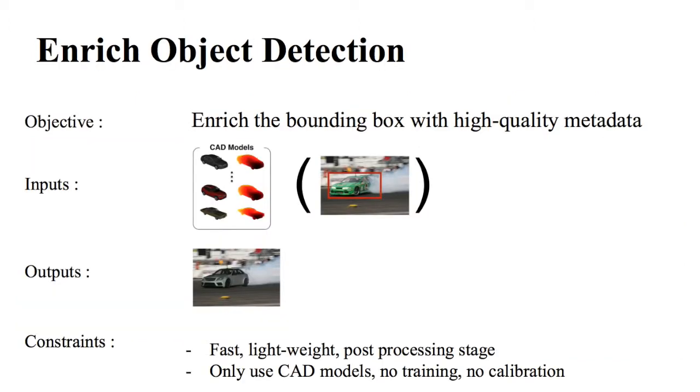The objective of our project is to enrich object detection bounding boxes with high-quality metadata. Our system takes detection results from other detectors as input and enriches them using CAD models. As output, our system produces accurate 2D-3D registration which gives depth, closest CAD model, subcategory, 3D continuous viewpoint, and focal lengths.